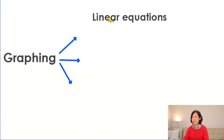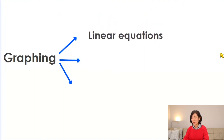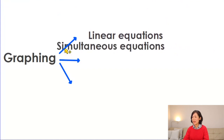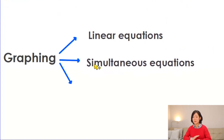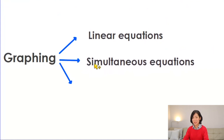This is the last lesson for the inequality topic. Now we are going to draw inequalities. In terms of the graph, we deal with graphing linear equations. The most important thing is the standard form of a linear equation: y = mx + c, where m is the gradient and c is the y-intercept. We also graphed simultaneous equations — the point where two line graphs meet is the answer. The last thing we will deal with is inequalities.